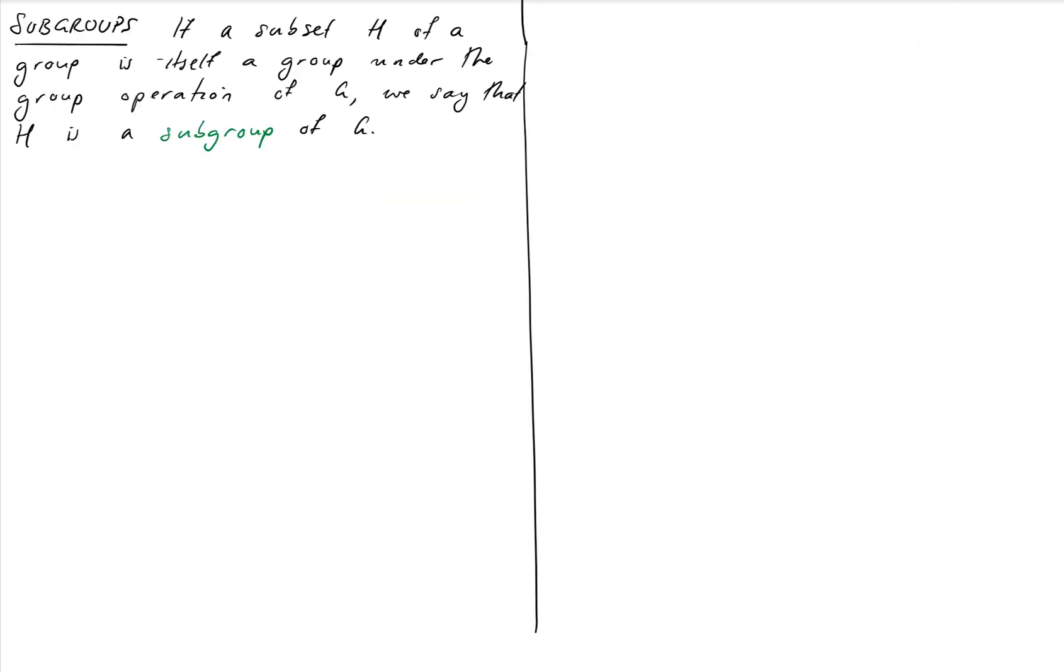The last thing that I want to discuss in this video is subgroups. Now we'll actually launch into this properly in the next one, but we wanted to get the definition out of the way first. So this is the notion that a group can contain other groups. Much like when we first looked at complex numbers, we saw we could take the subset of 1, -1, i and -i, and they formed a group just in and of themselves.